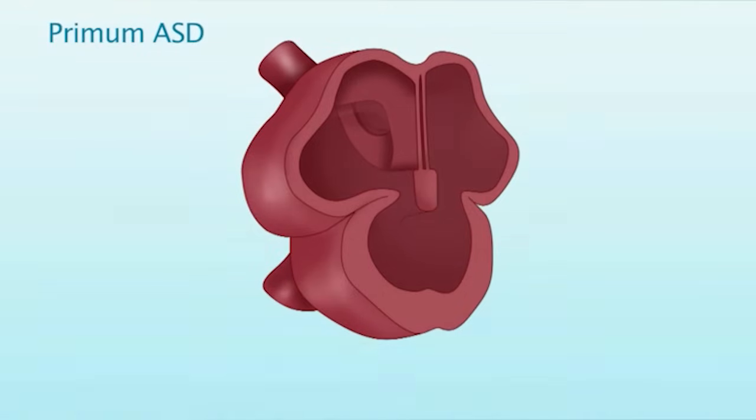A primum atrial septal defect is an opening in the lower part of the atrial septum near the tricuspid and mitral valves. It results from problems in the growth of the endocardial cushion tissues. A defect here is often associated with a defect in the mitral valve as well as tricuspid valve.